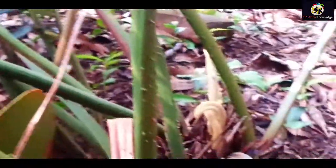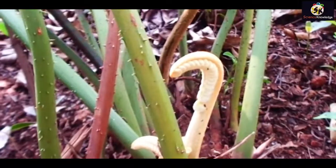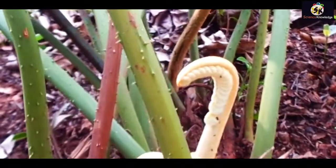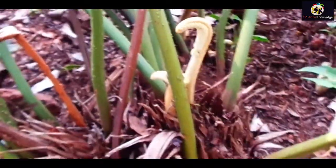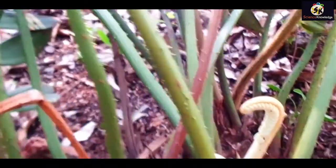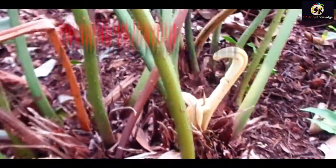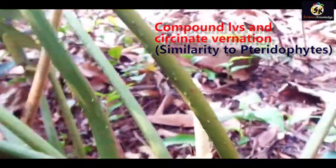The compound leaves, which are pinnately compound forming fronds, is the characteristic of pteridophytes. Similarly, formation of circinate vernation in newly developing leaves is also a characteristic. Here we can see the circinate vernation.